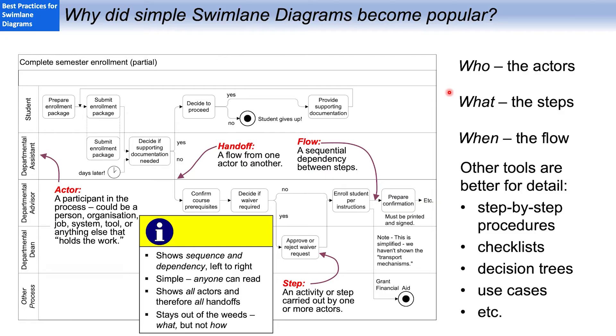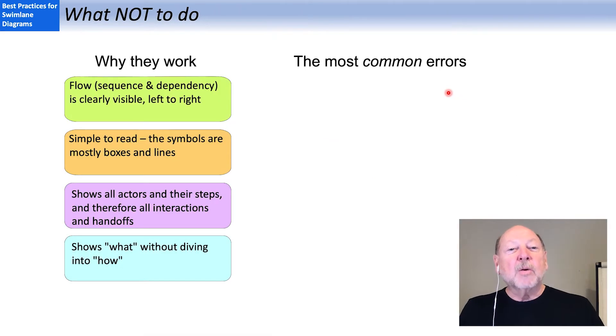And they stop at the point where we say what the actor is doing without getting into the details of how, because these tools are really not that good for detail. Other job aids like procedures, checklists and decision trees are better tools.